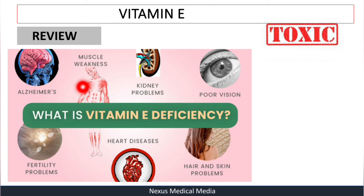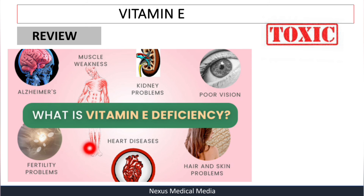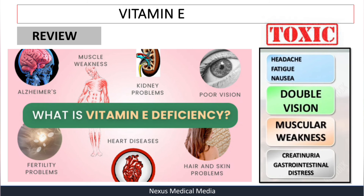To review: signs and symptoms of vitamin E deficiency include Alzheimer's disease association, muscle weakness, kidney problems, poor vision, infertility — vitamin E is sometimes taken as a supplement to improve fertility, especially in males — as well as heart disease and hair and skin problems.